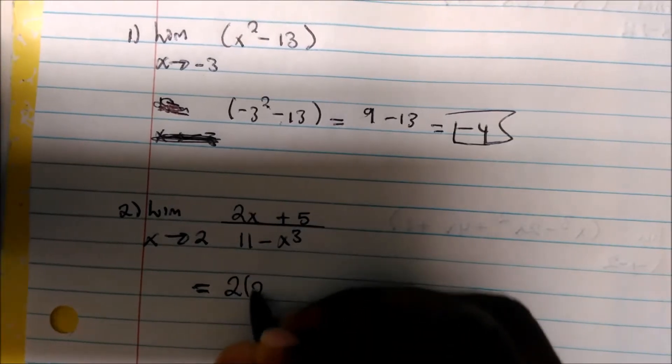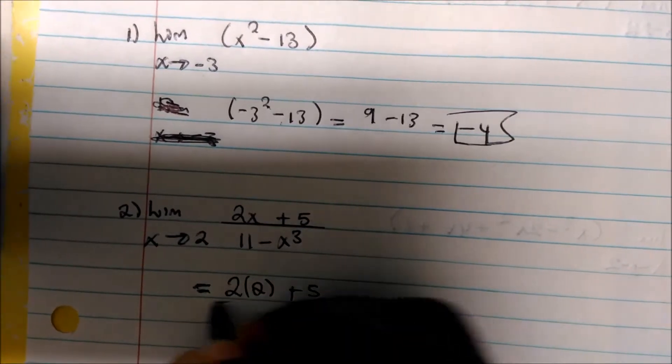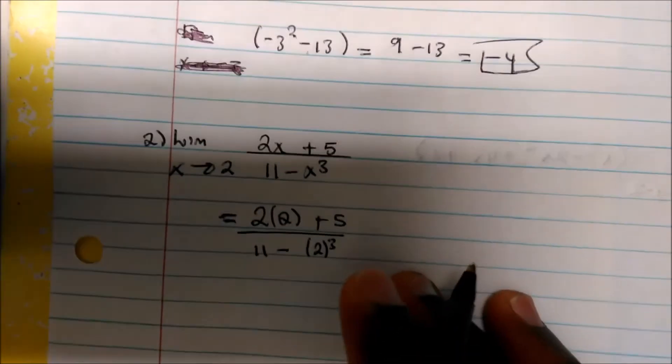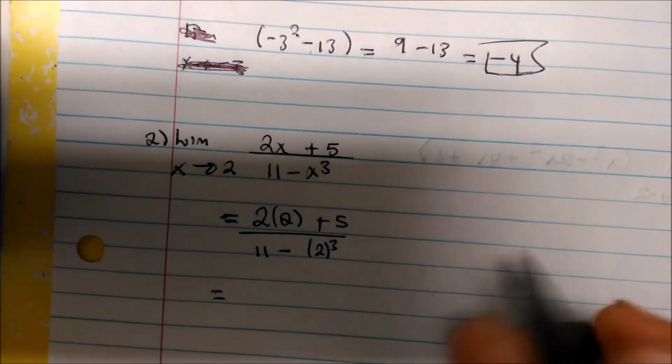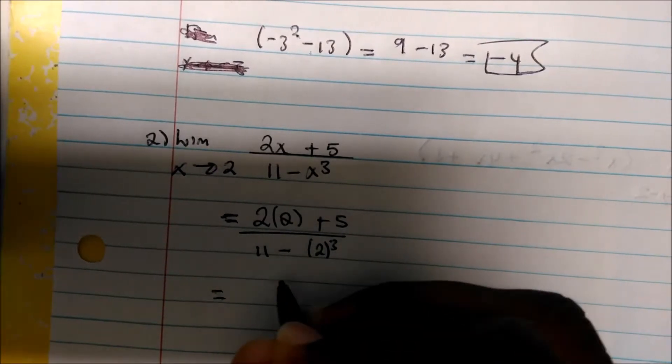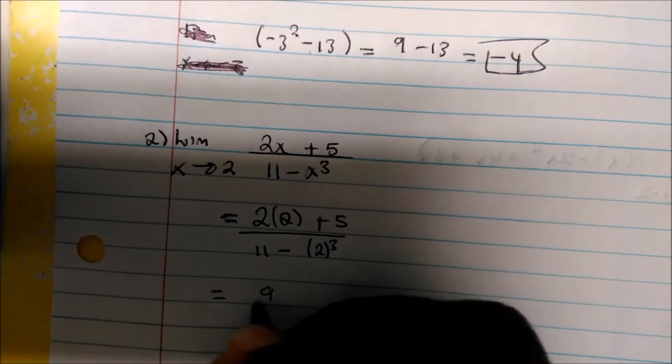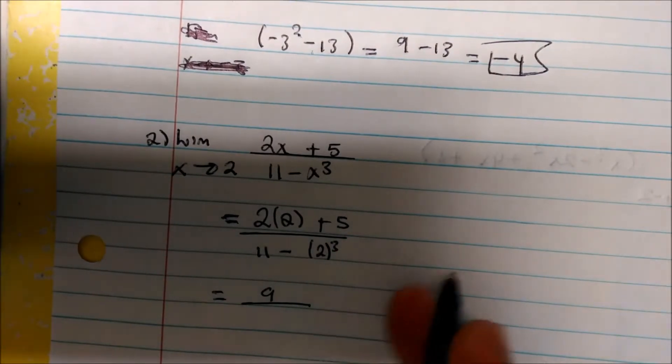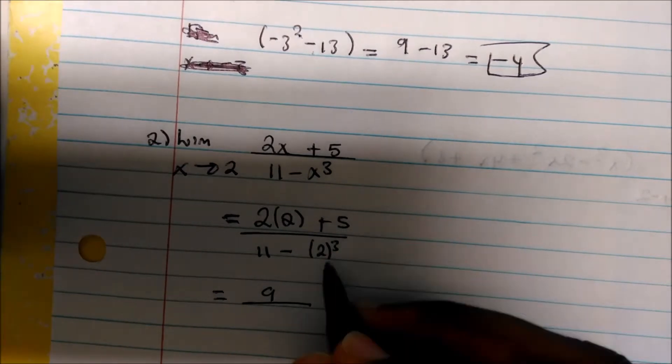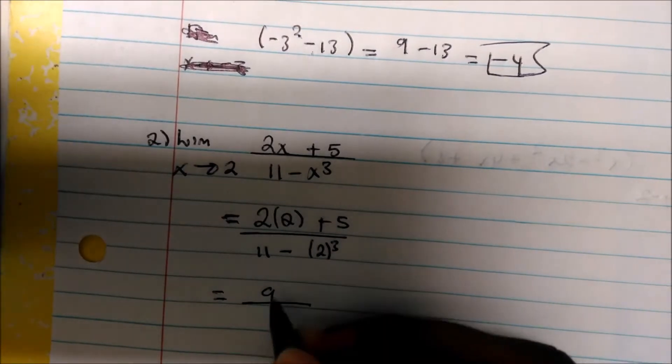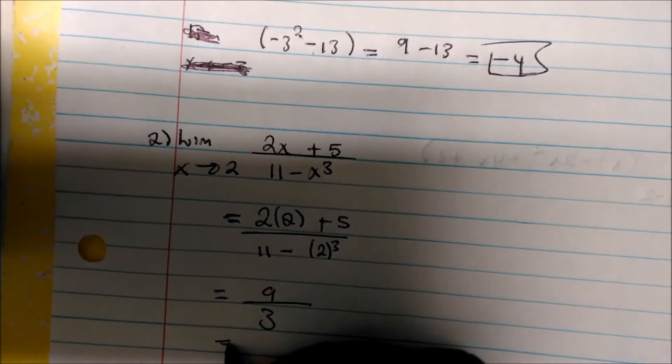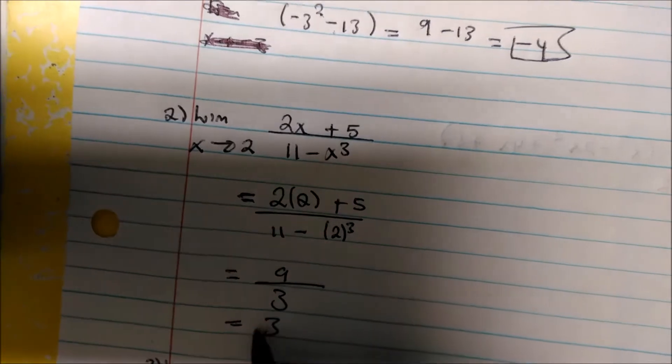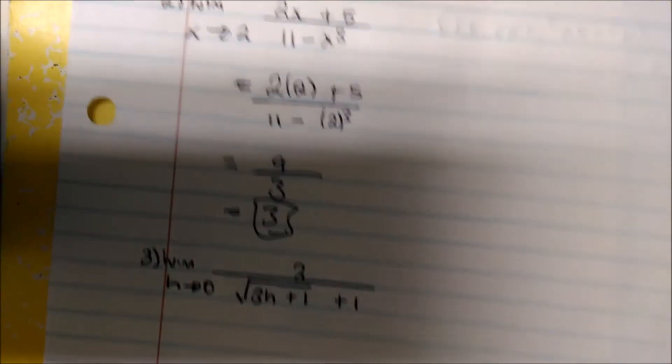We could just continue with the equal sign until we find our limit. So 2 times 2 plus 5 over 11 minus 2 cubed. This simply equals, well, 2 times 2 is 4 plus 5, so that's 9, over 11 minus 8, which is 3. And so we can see that our limit is going to be 3, because 3 divided into 9 is 3.